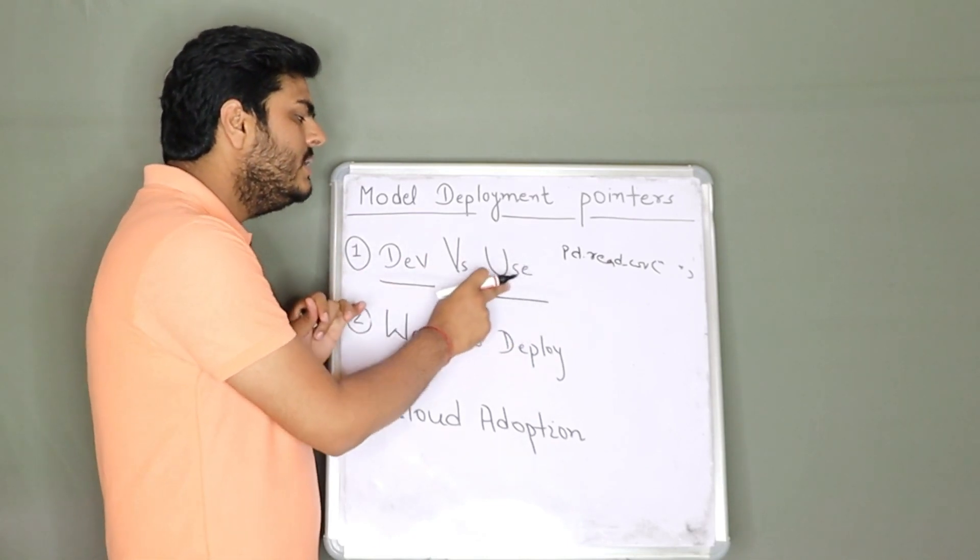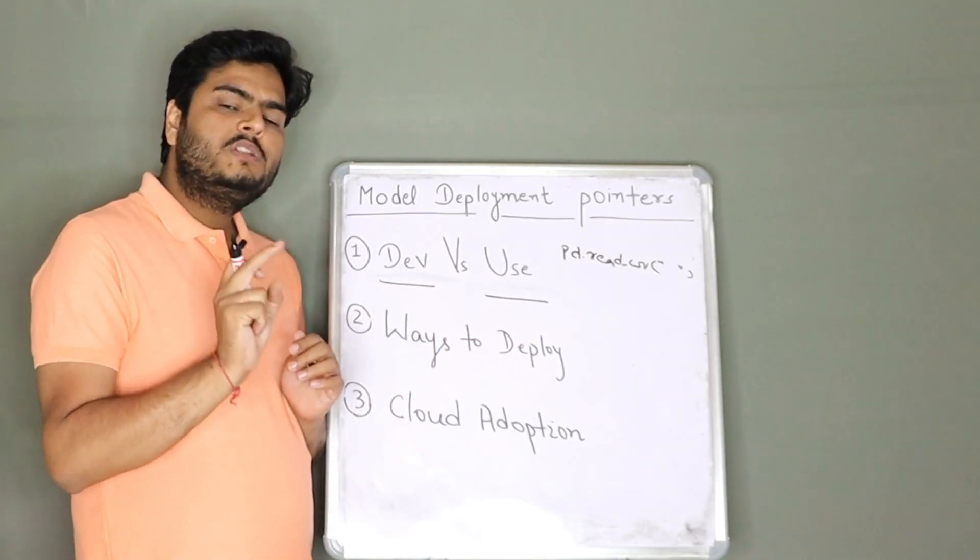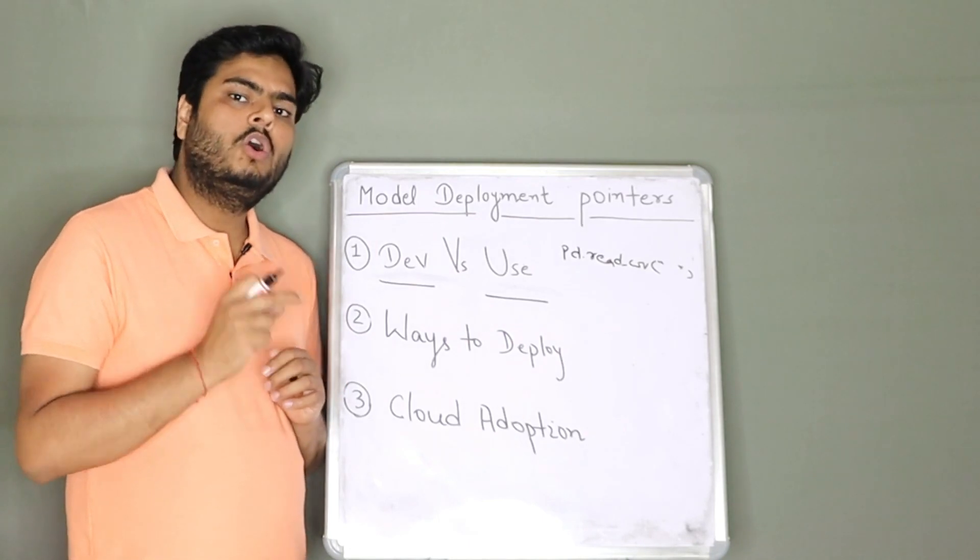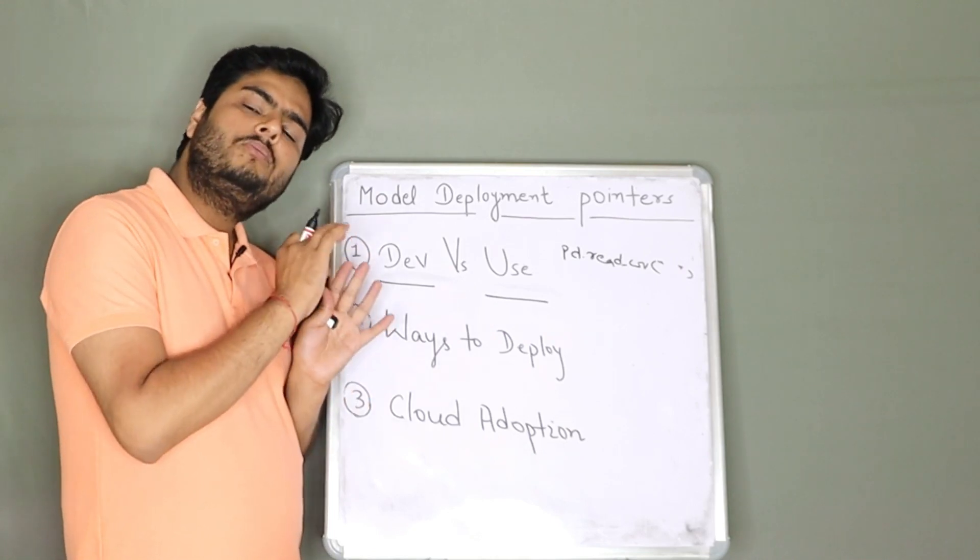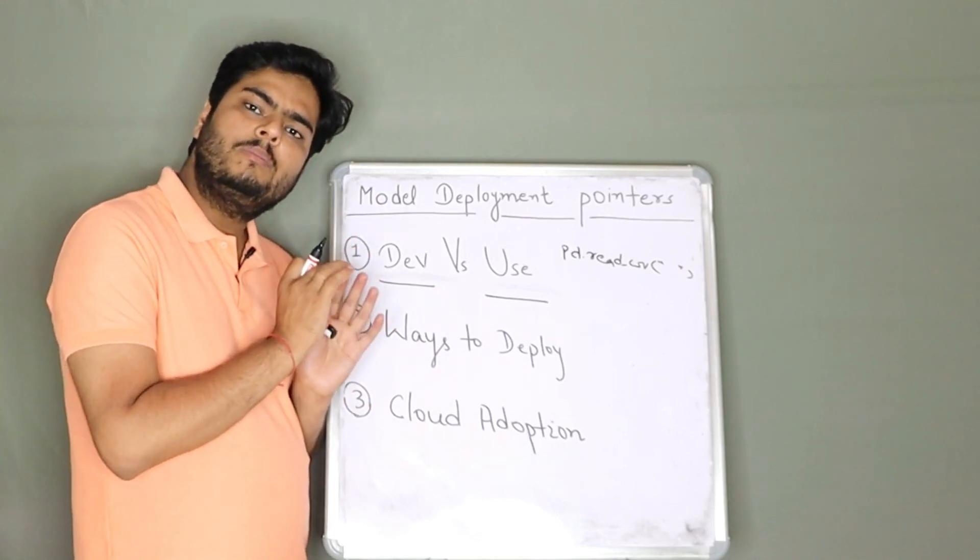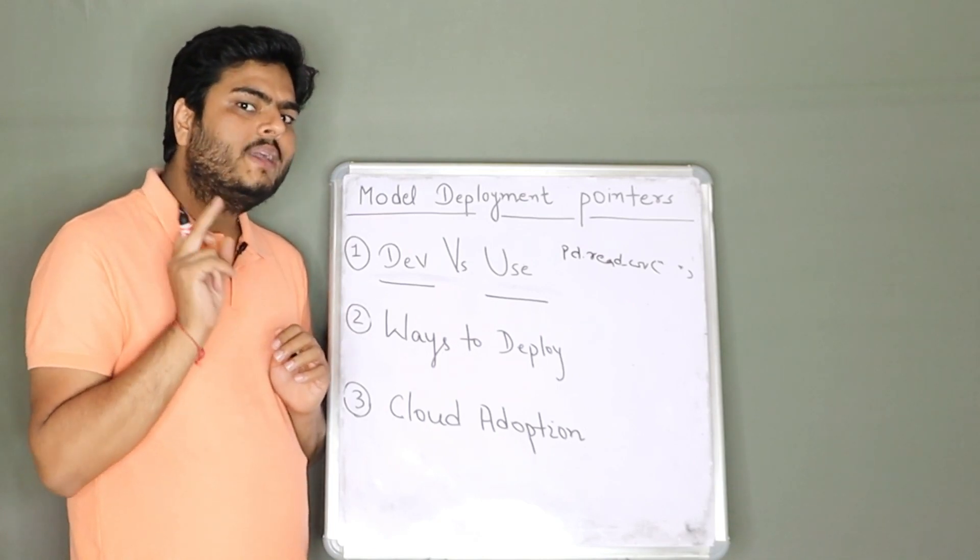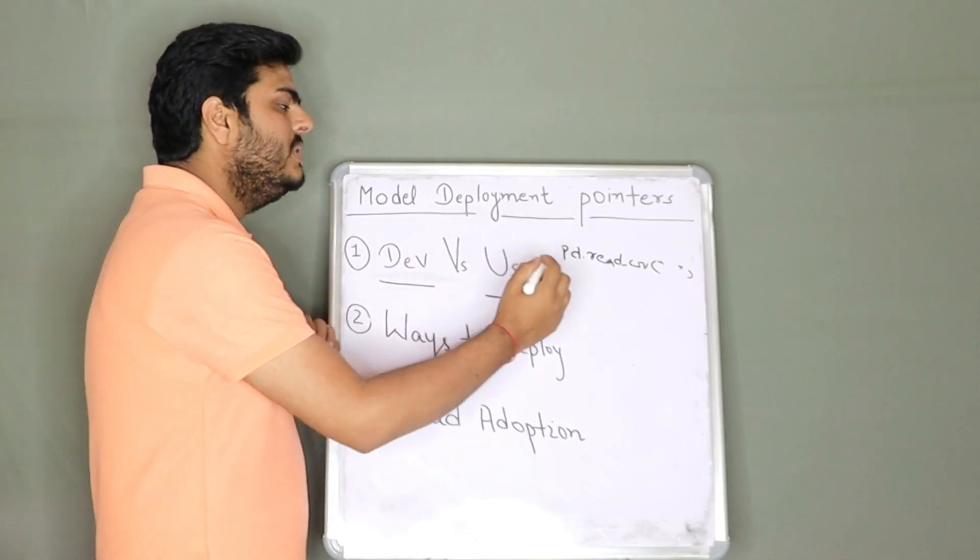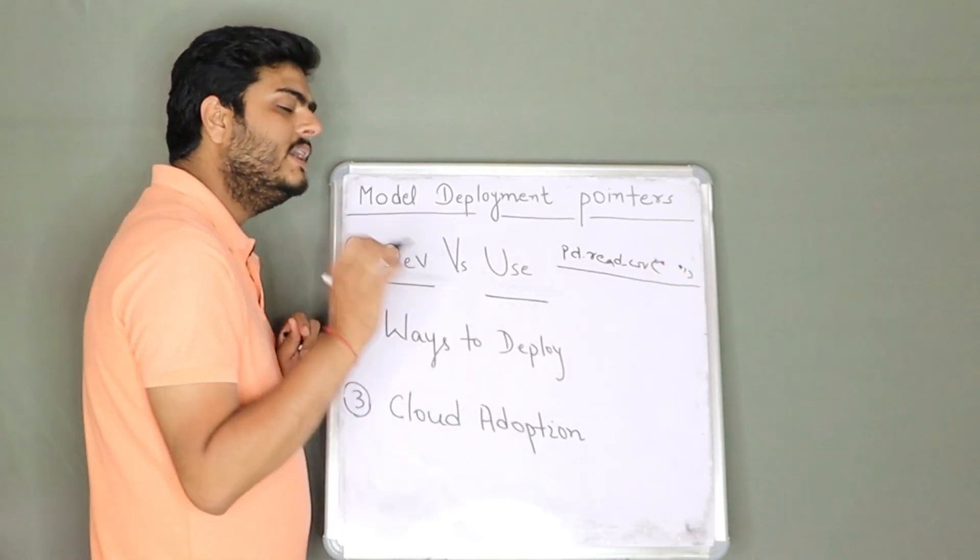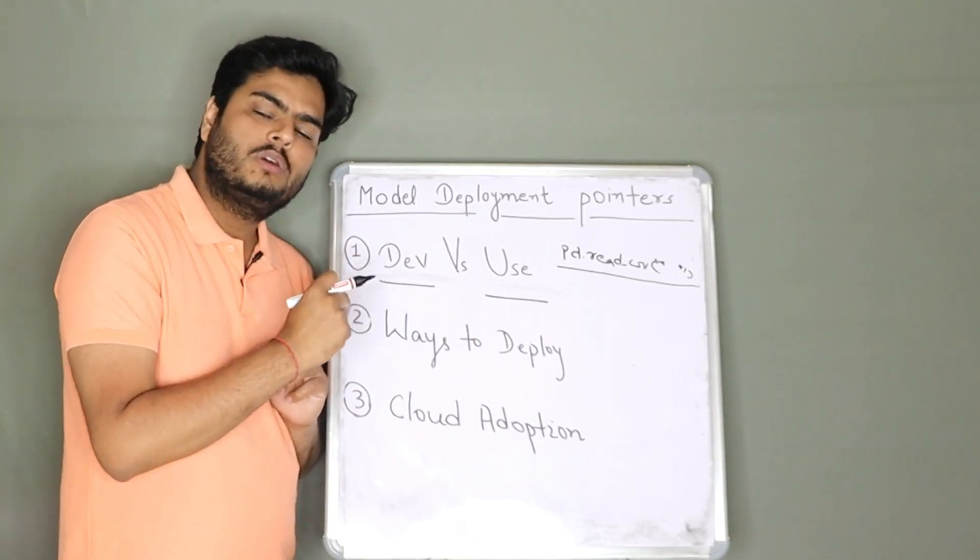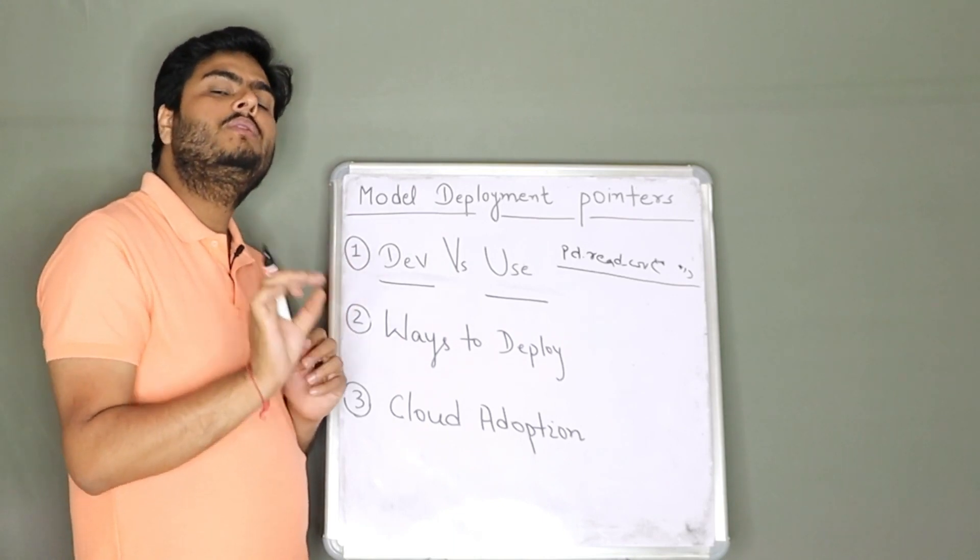But here, when you deploy the model, what might happen is the record on which prediction has to happen or the record on which I want to use that model that might come from a third party server, that might come as an argument to your script. So what can happen here is this pd.read_csv will not take a file path or will not take a .csv as an input. Similarly, when you connect to the database, that connection query will change.